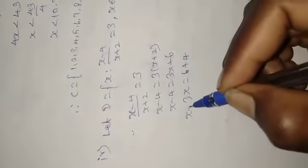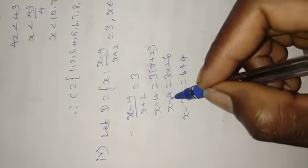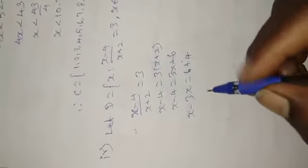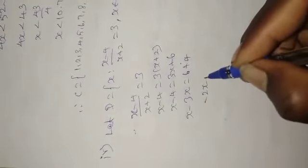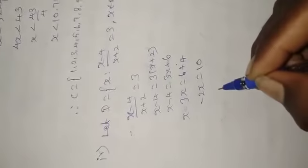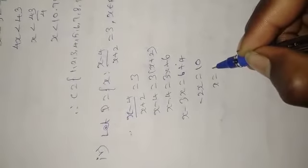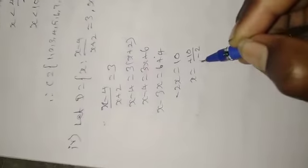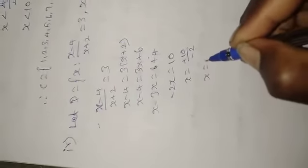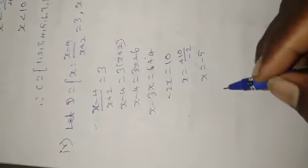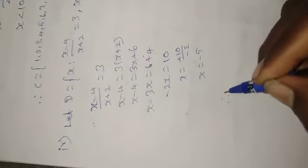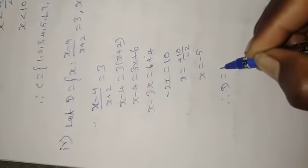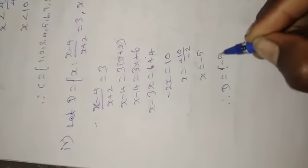Taking X minus 3X to this side, and minus 4 to this side as plus 4. So finally, minus 2X equals 10, X equals plus 10 divided by minus 2, X value minus 5. So therefore, D equals {-5}.